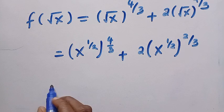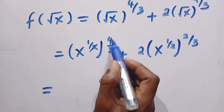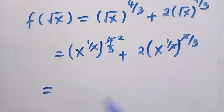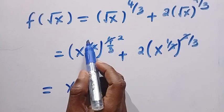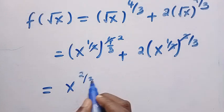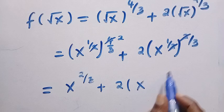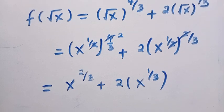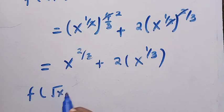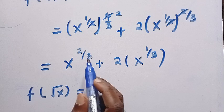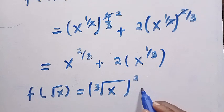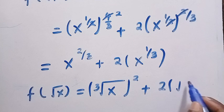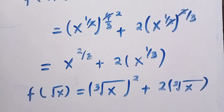By multiplying the exponents together: one-half times 4 over 3 gives 2 over 3, and one-half times 2 over 3 gives 1 over 3. So we get f of root x equals x raised to the power of 2 over 3 plus 2x raised to the power of 1 over 3. This can also be written as the cube root of x, all raised to the power of 2, plus 2 times the cube root of x.